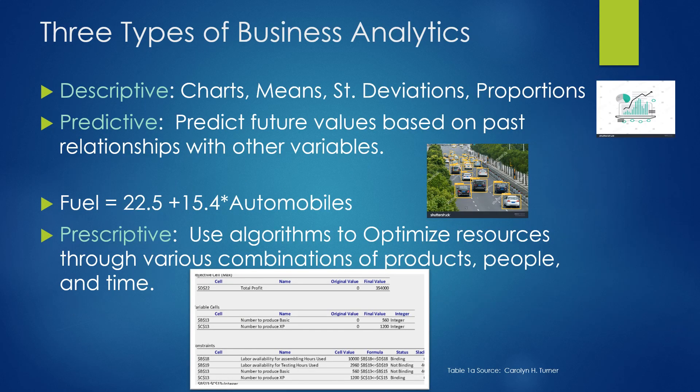There are three types of business analytics we'll study. Descriptive — you did a bit of this in QBA 2302 where you built histograms, bar charts, pie charts, polygons, and ogives, or described data with means and standard deviations. In predictive analysis, we build mathematical models. Prescriptive analytics uses algorithms to optimize our resources, looking at different combinations of products, people, and time to maximize or minimize different items.